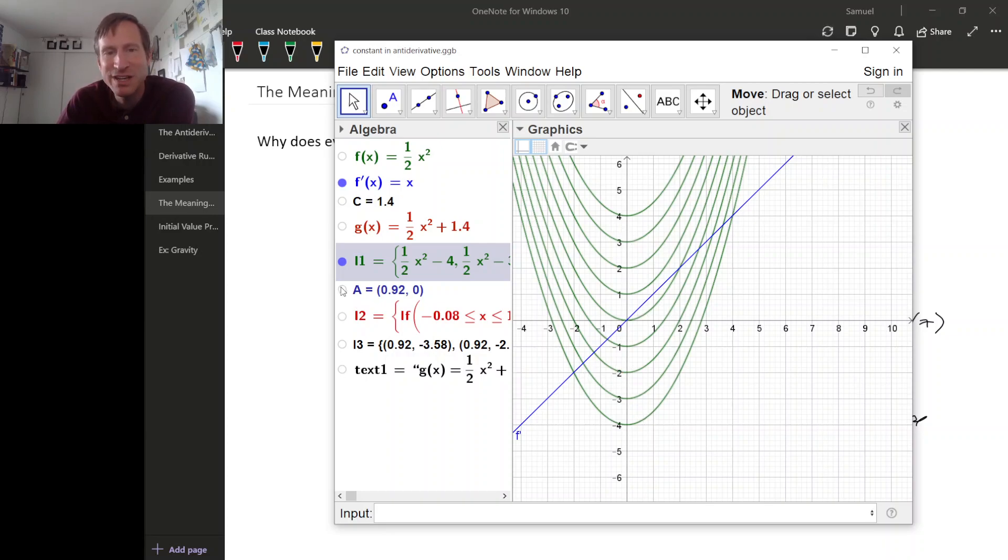And what we can do is plot the slopes of many tangent lines. So here are all of the tangent lines to all of these antiderivatives at the same x-coordinate, and you can see all of these tangent lines, they all have the same slope.